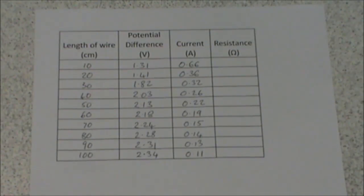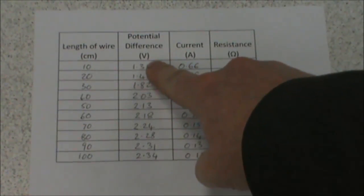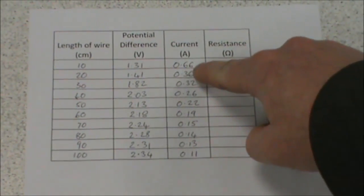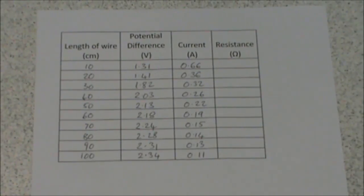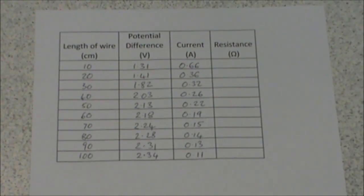Using Ohm's law, we now need to calculate the resistance. To do this, we divide the potential difference in volts divided by the current in amps. You can now complete this results table using these results.